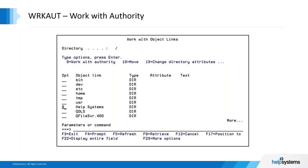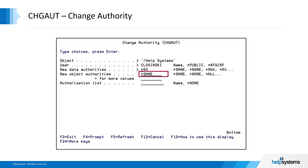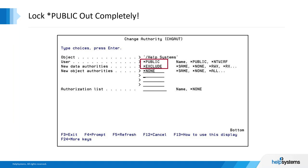The security commands should look somewhat familiar if you're used to IBM i library-type authorities, but the OBJ in the middle of the command is not there because we're working with stream files. We work with display authority, work authority, change authority, and change owner commands — specific to the integrated file system. You can navigate into the security of a stream file or directory using option 9 'work with authority' in the work with object links command. Here we take option 9 next to the Help Systems directory and see that Lisinski has read and execute authority.